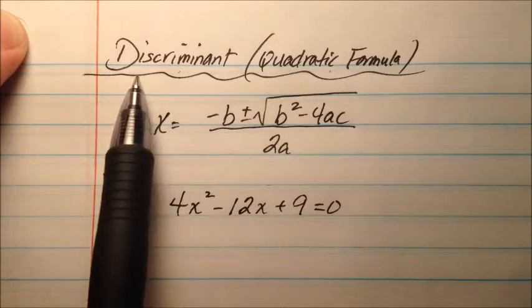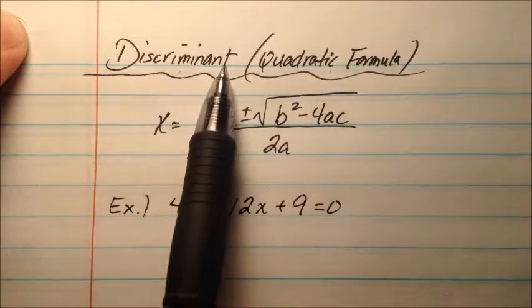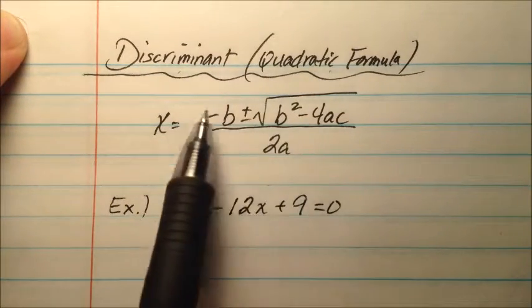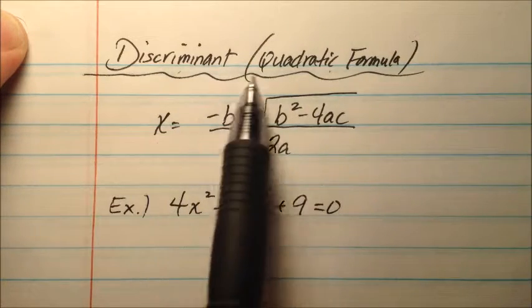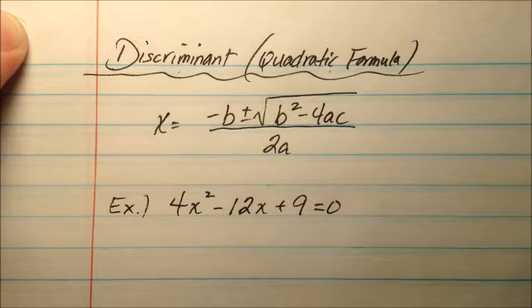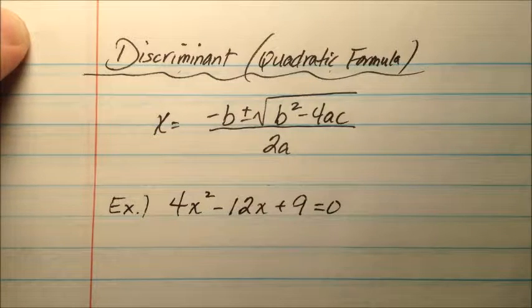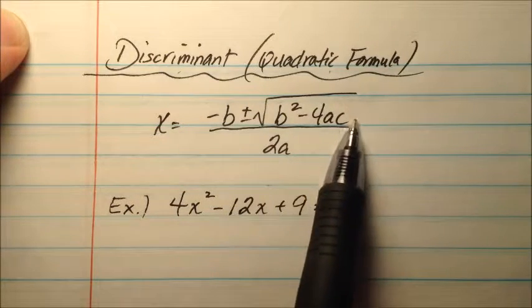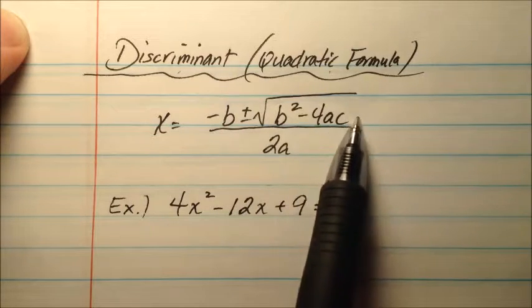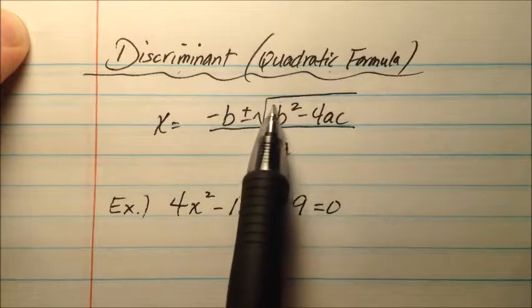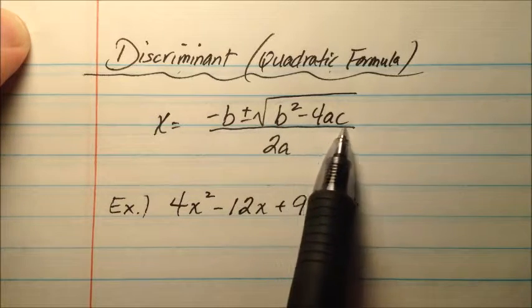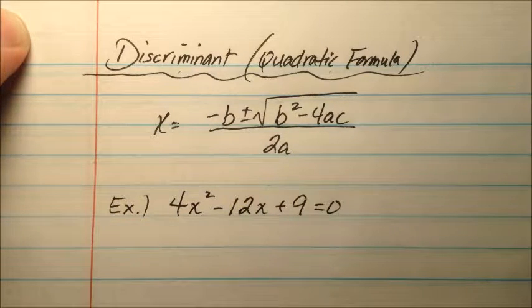In this video, I'm going to discuss the discriminant, which is a part of the quadratic formula. The discriminant is just the part inside the radical — b squared minus 4ac. It does not include the radical itself; it's only the radicand, the stuff underneath the radical.